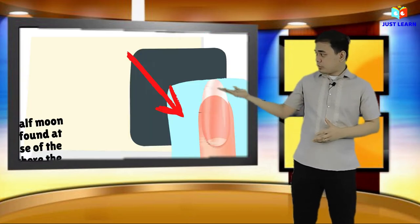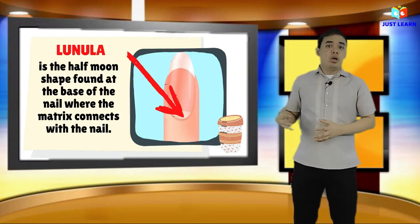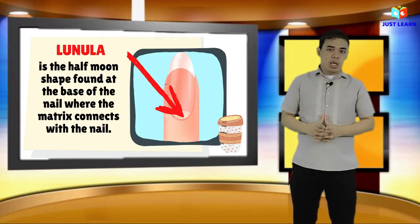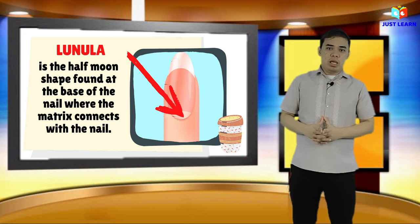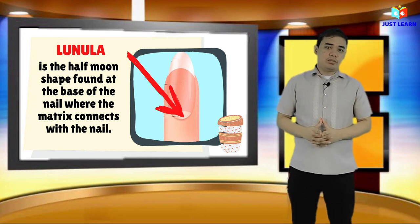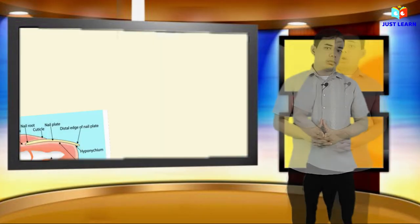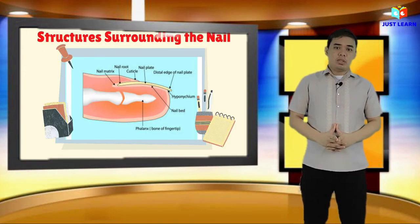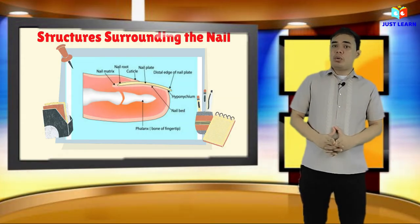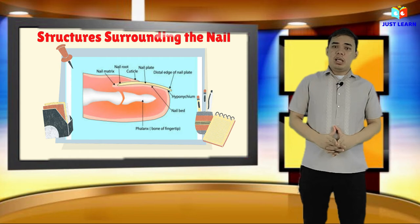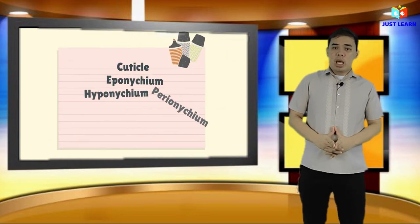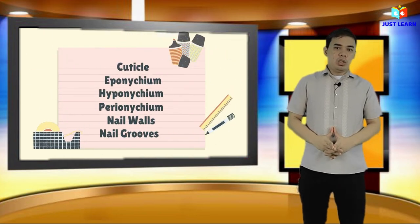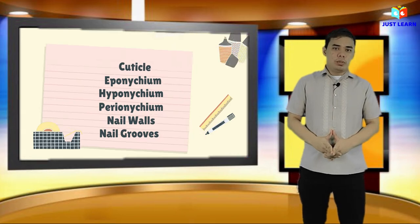And lastly, the lunula. The lunula is the half-moon shape found at the base of the nail, where the matrix connects with the nail. Also, there is a structure surrounding the nail. The structures surrounding the nail include the cuticle, eponychium, hyponychium, perionychium, nail walls, and nail grooves.